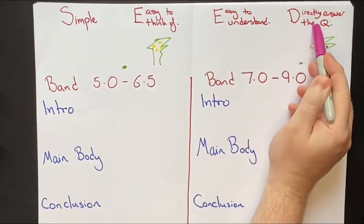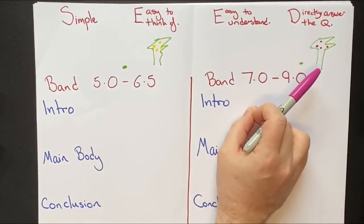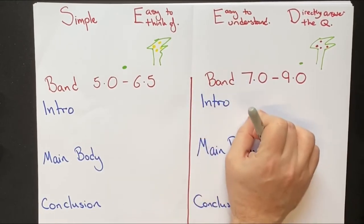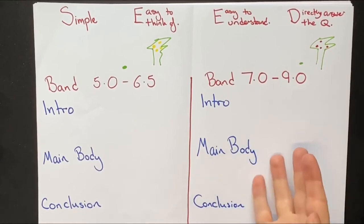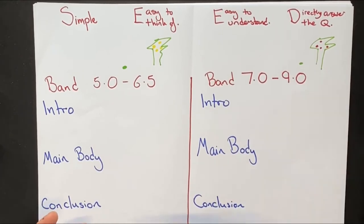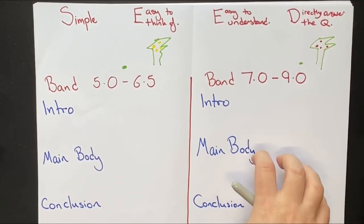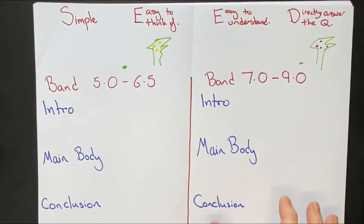Whereas if you think of simple ideas that directly answer the question and are easy to think of and understand, in your introduction you're going to directly answer the question using those simple ideas. The examiner will find it very easy to understand just from your introduction whether you've understood the question. Because simple ideas are easy to write about, in your main body they are very easy to explain and it's very easy to think of an example. Then you'll be able to write a very clear conclusion which summarizes those simple main ideas and directly answers the question. By starting off with the right seed, this produces a very high quality essay.